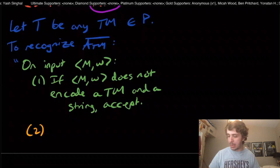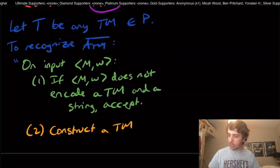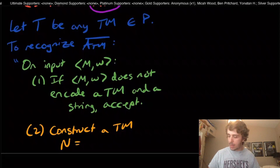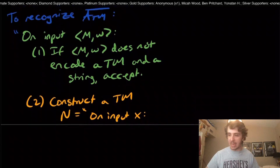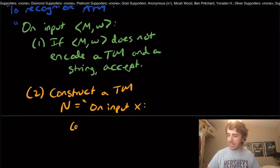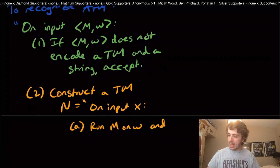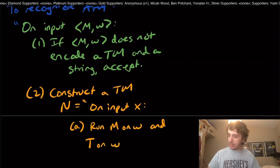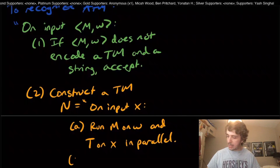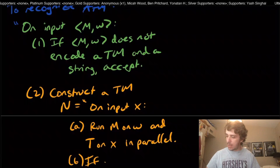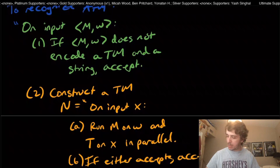After step one, we know M and W form a valid Turing machine and input. But we can't just feed M into the supposed recognizer for P, so we construct an auxiliary Turing machine N. On input X, N runs M on W and T on X in parallel. The second step is: if either accepts, then we accept X.